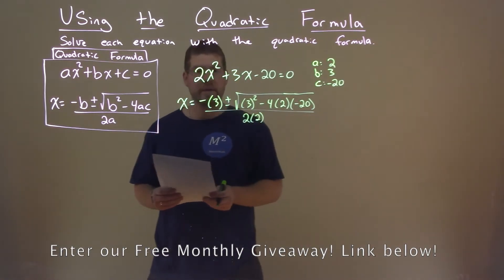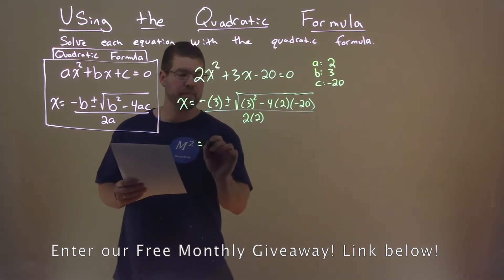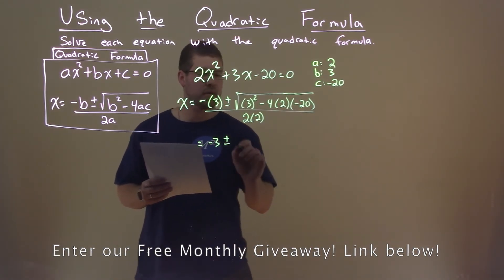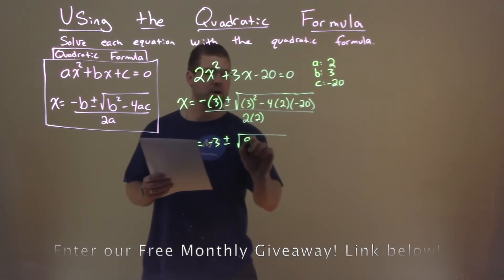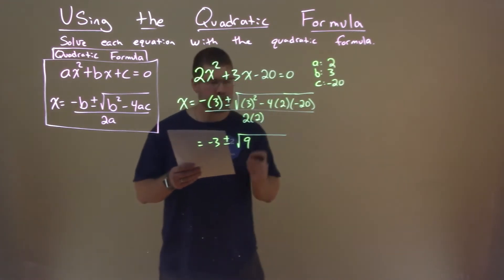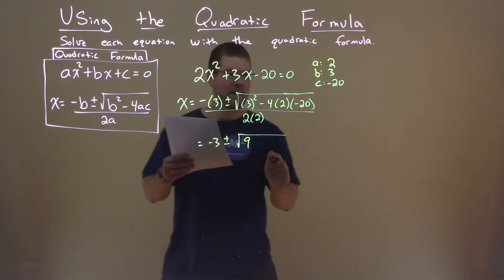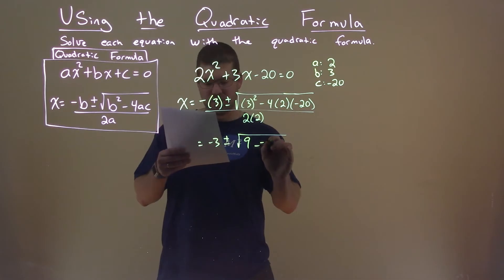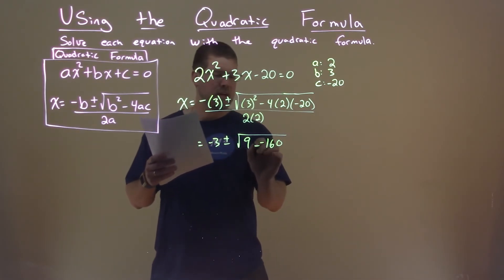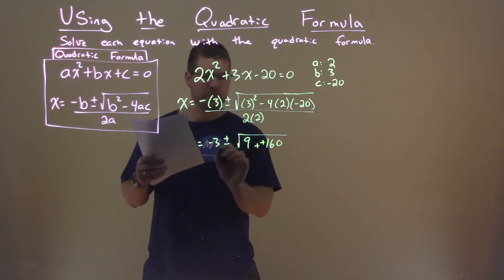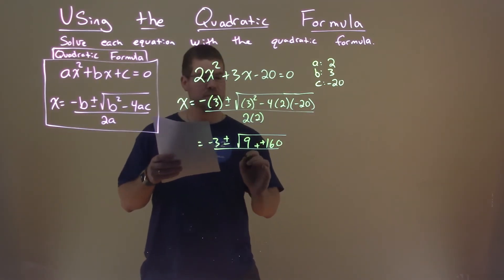Where do we go from here? We've got to simplify. Negative 3 plus or minus the square root of—3 squared is 9, and 4 times 2 times -20 is -160. Minus a negative is adding a positive, all over 2 times 2, which is 4.